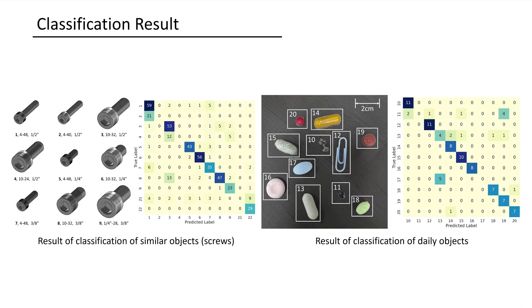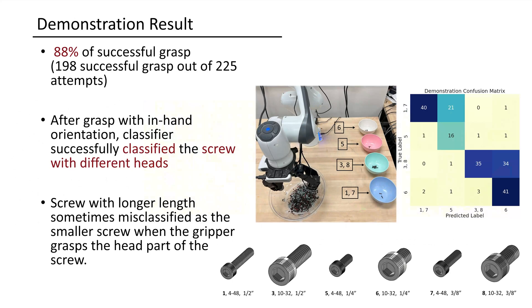Following results show the classification result of similar screws or classification of daily objects with confusion matrix. For the demonstration result, we showed that our process grasped the unknown small object with 88% success rate while classifying the screws with different heads correctly. Thank you.